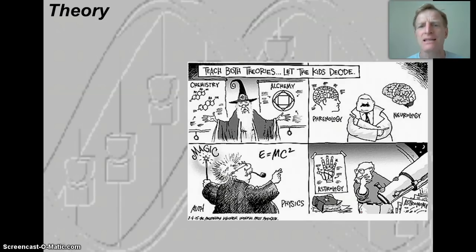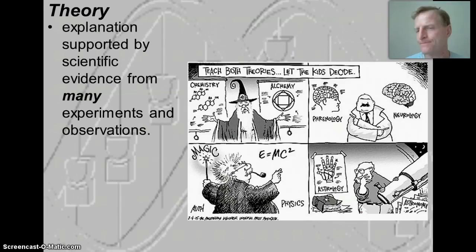When we talk about scientific theories, we're talking about something that has been tested and supported again and again using different observations and experiments. So, for example, alchemy versus chemistry. Chemistry has actually been tested. We've tested the theories in chemistry and they've been supported.